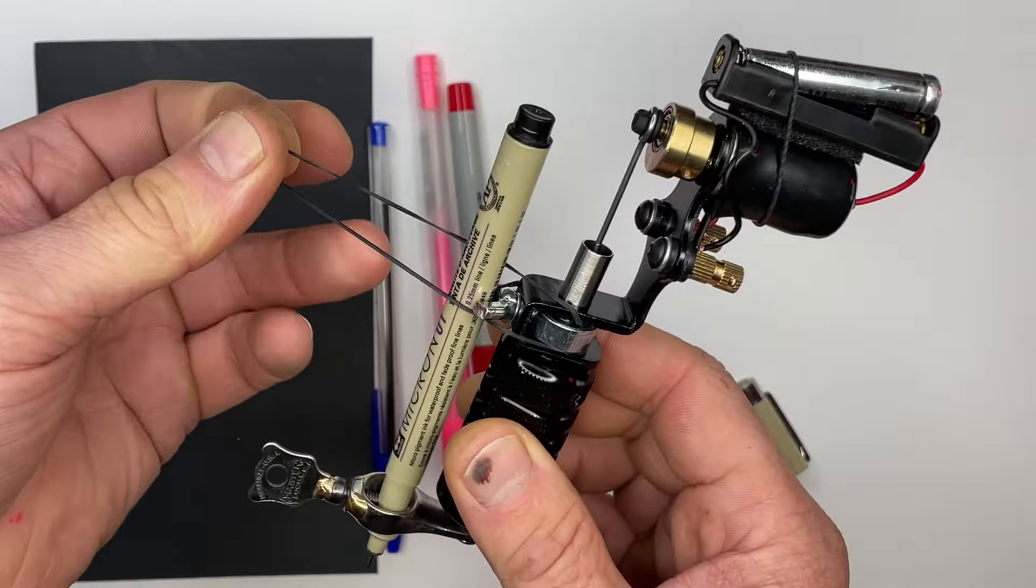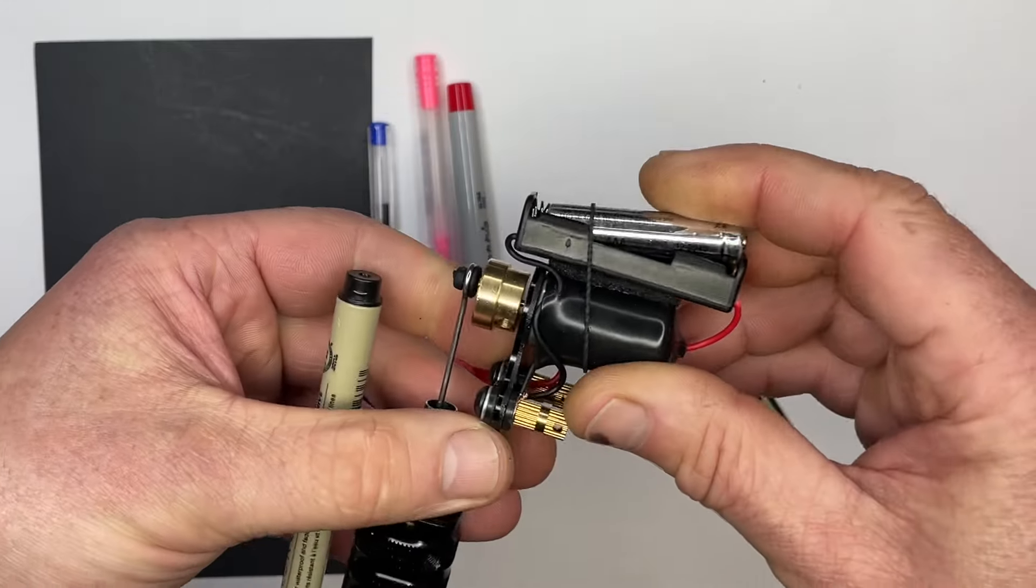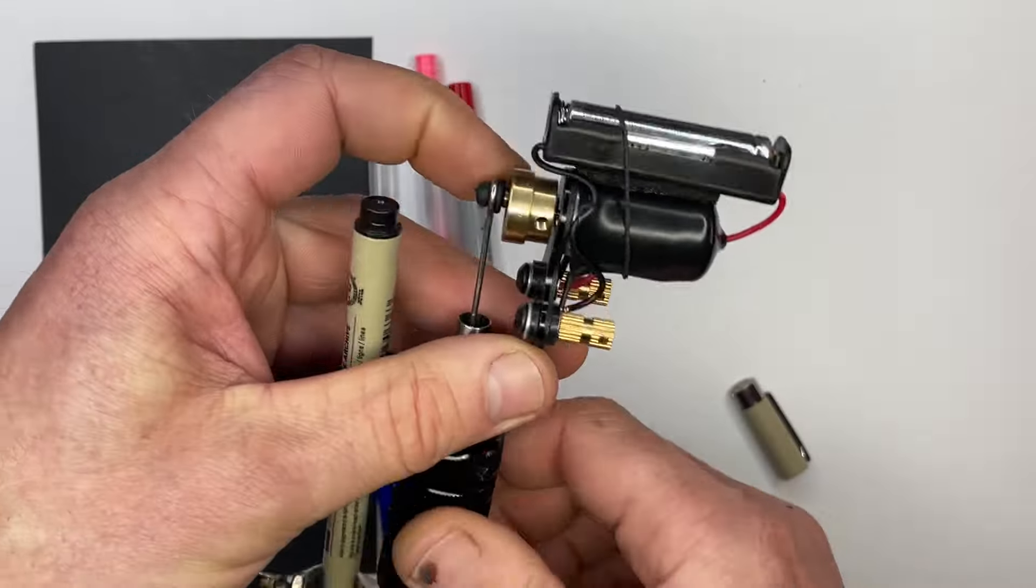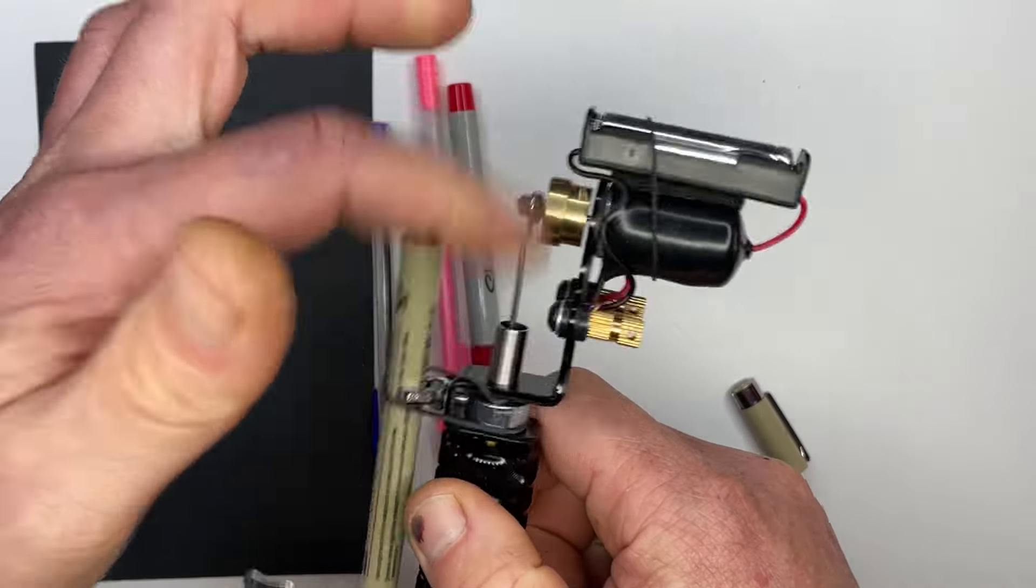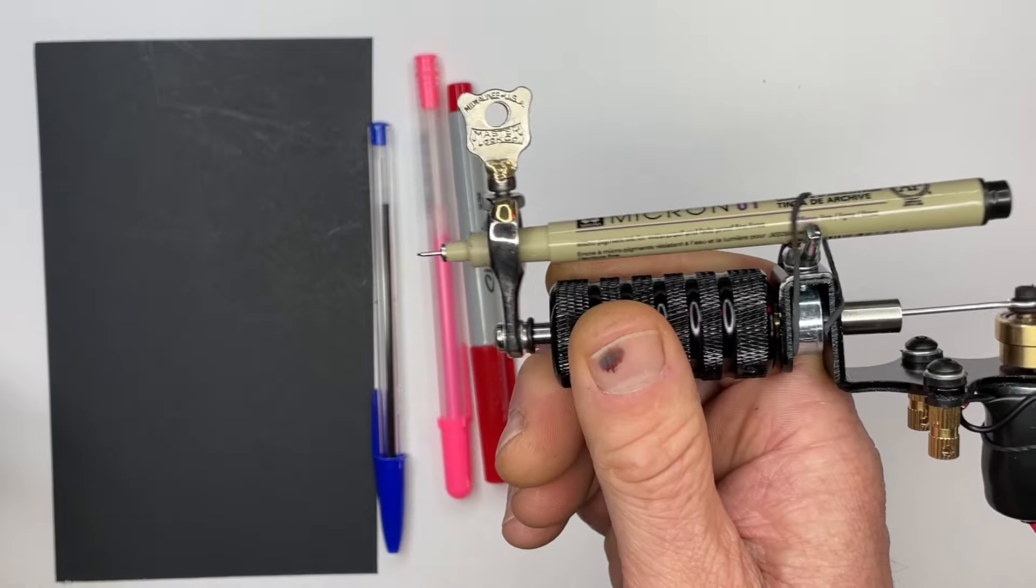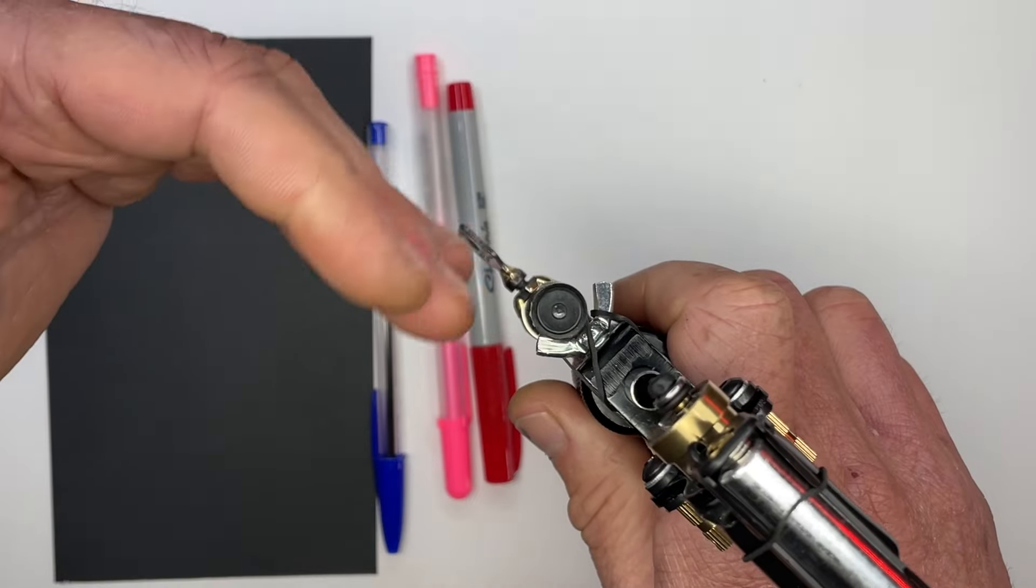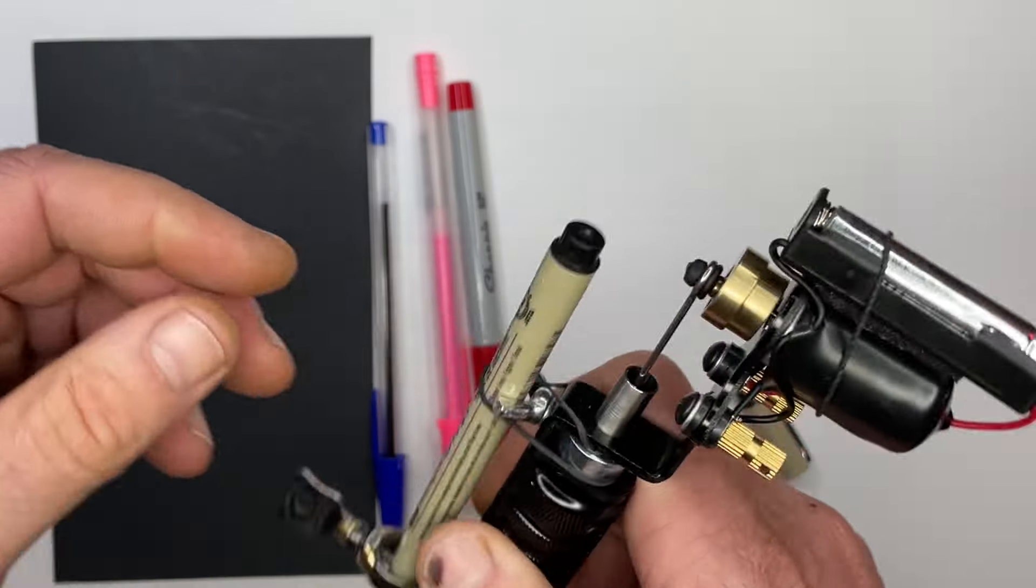Put the rubber band on the top of the pen. That'll hold it in place. Snap the battery back in. You might have to give it a little one of these with your finger to get it going.